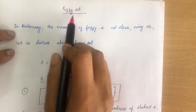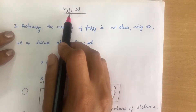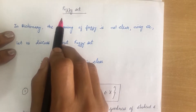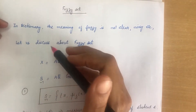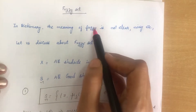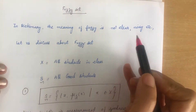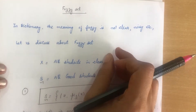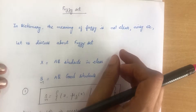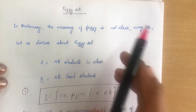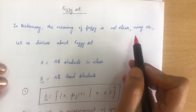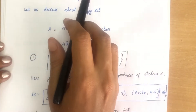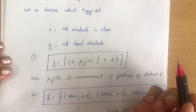Good morning everyone. In today's video I will be explaining fuzzy sets, their operations and properties. In the previous video we covered classical sets. In a dictionary, 'fuzzy' means things which are not clear or noisy. In Boolean logic everything is precise, so we can easily conclude either true or false. But in the case of a fuzzy set, if information is not clear or noisy, we cannot come to a conclusion — that is when we use fuzzy logic.